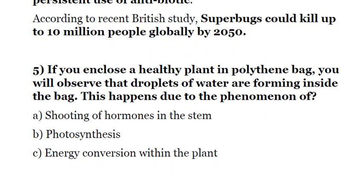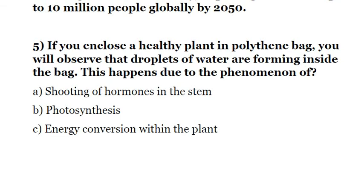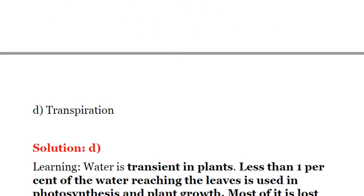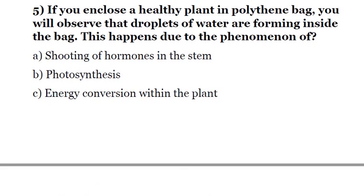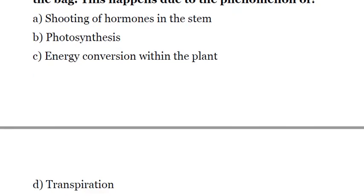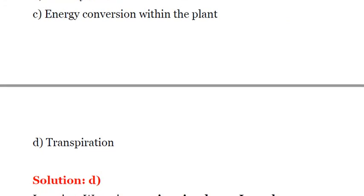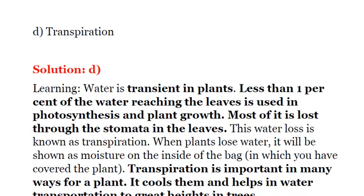Fifth question: if you enclose a healthy plant in a polythene bag, you will observe that droplets of water form inside the bag. This happens due to the phenomenon of: A — shooting of hormones in the stem; B — photosynthesis; C — energy conversion within the plant; D — transpiration. This process is transpiration, because water in plants is in a transient stage — roots pick up water and moisture, which is then released through transpiration. Less than one percent of the water that reaches leaves is used in photosynthesis, so the answer is D. Moisture is released through stomata in the leaves.